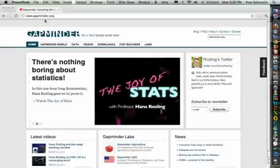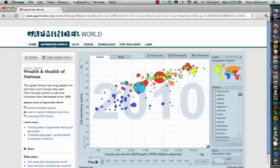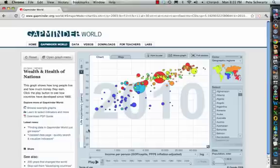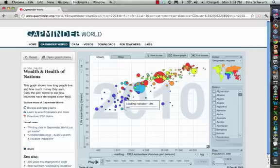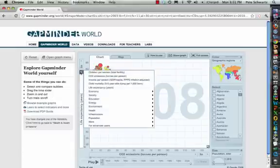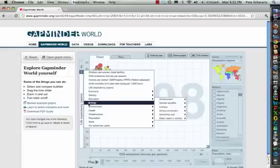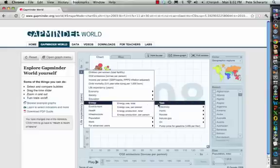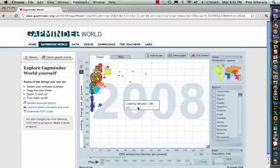We go to Gapminder.org. And we can take established statistics and create our own graphs. So let's take a look at CO2 emissions versus energy use, energy per person.